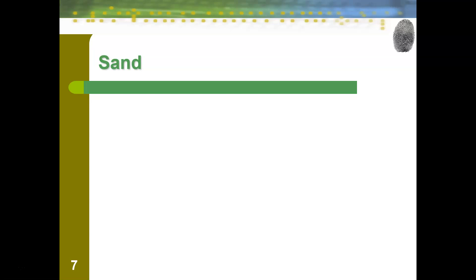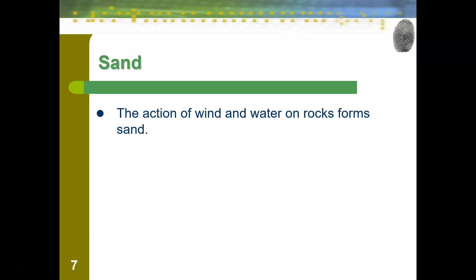Sand is one of our most common soil types. Sand is made by the action of wind and water on rocks, which can take millions of years. If you ever go to the ocean, you can actually see sand being made — you'll find sections of beach with very soft sand, but occasionally hit a patch with very jagged sand where it hasn't been broken down yet. Millions of years from now, it will be nice sand.